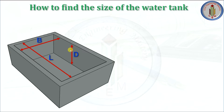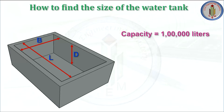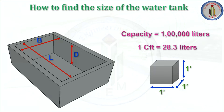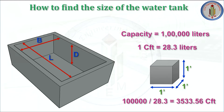Now let's see how we find out the size of the water tank. We need to find the inner dimensions — length, breadth, and depth — to know how much water it can hold. Our required capacity is 1 lakh liters. We know that 1 cubic feet can hold 28.3 liters of water. So: 1,00,000 liters ÷ 28.3 = 3533.56 cubic feet. This is the volume required to hold 1 lakh liters of water.